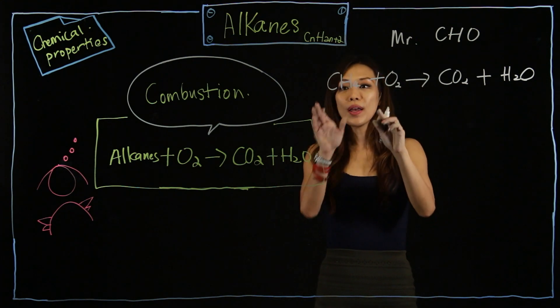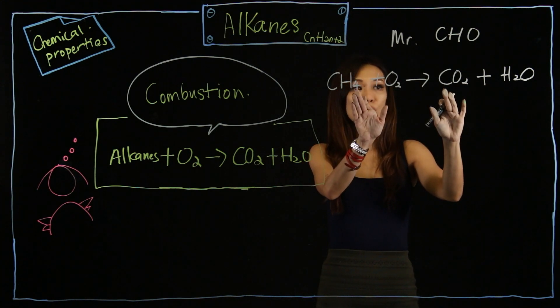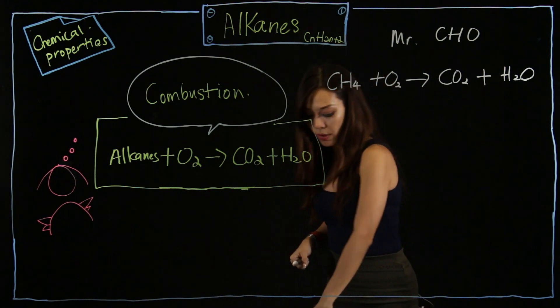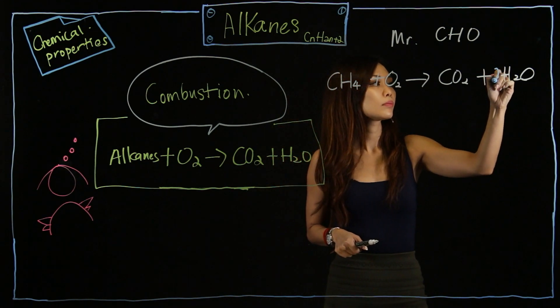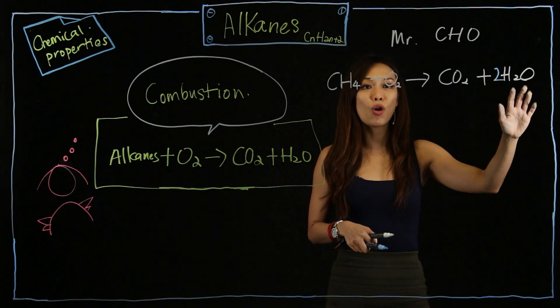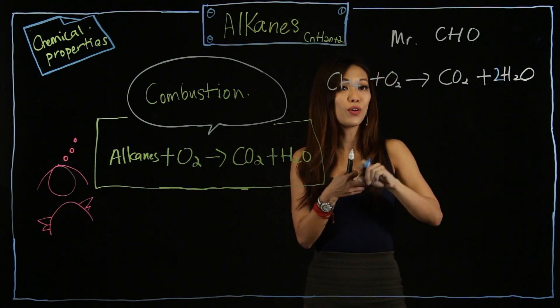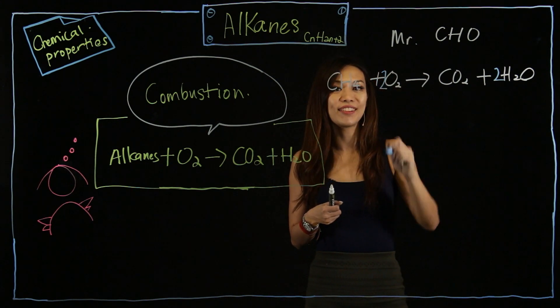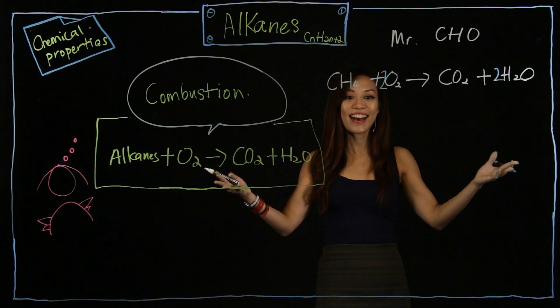So C1 C here, H is 4, I should put a 2 in front. How many O are there in total? 2O plus another 2O total, there are 4O. So I just need to put a 2 in front here. Ta-da! I balanced the equation.